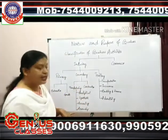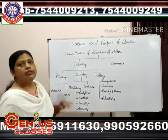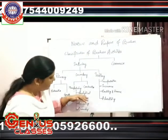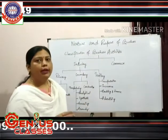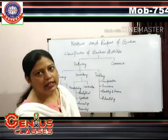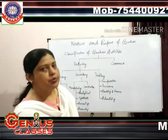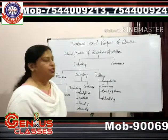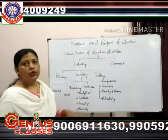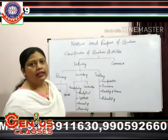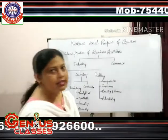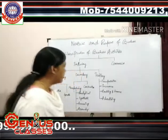We divide manufacturing industries into four categories. First is analytical industry, where we break down raw materials into different parts to produce new products. For example, crude oil is broken down to make products like petrol, kerosene, vaseline, and so on.